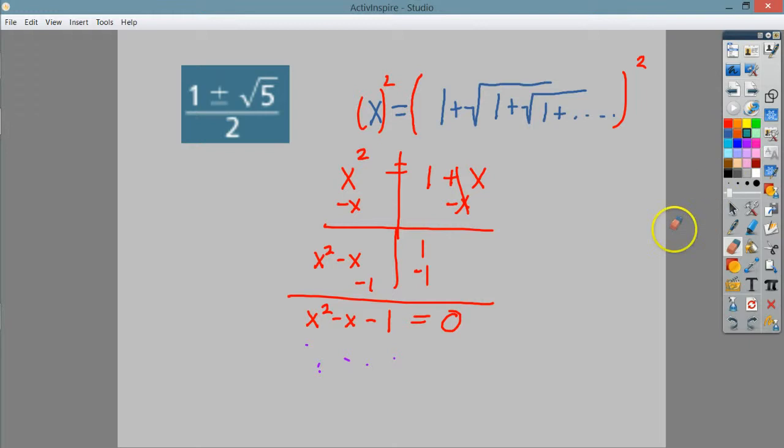So I will do negative b plus or minus the square root of b squared minus 4ac over 2a. And under here I'm going to mark the 1 as the coefficient on x squared, the number in front, so it's just 1. b would be negative 1 and c would also be negative 1. Now I'm just going to plug some stuff in.